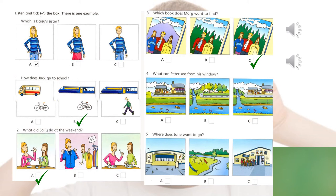What can Peter see from his window? He can see the town shops, but he can also see a waterfall. And he says that it's beautiful. So again, letter C.